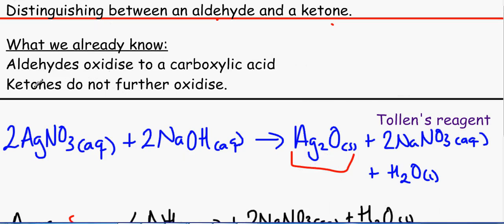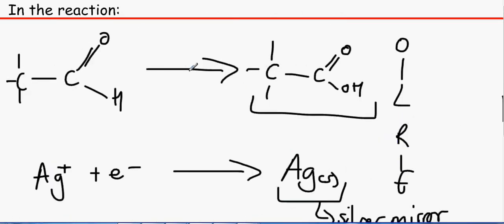Remember, ketones do not further oxidise. So this would not happen if we had a ketone in the middle. This will not oxidise, and therefore, this will not reduce to make the silver mirror.